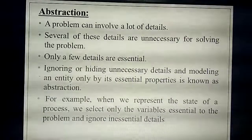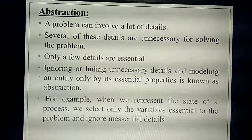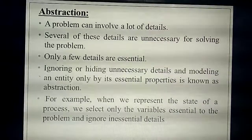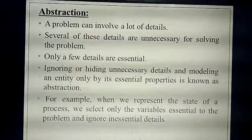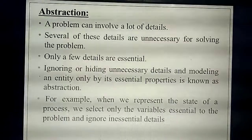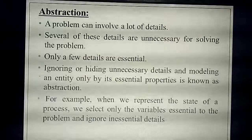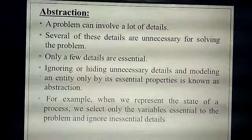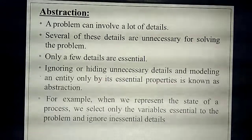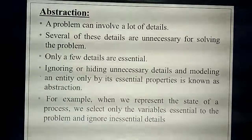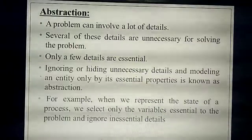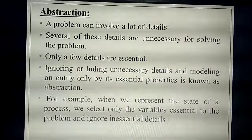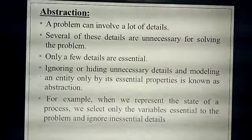For example, last class we studied the traffic signal example to represent state. In a traffic signal, how many states are there? Three: green, red, or amber. In a program, how you represent those states? Using variables. Only those essential variables are displayed in the program and non-essential details are not represented. So, abstraction means hiding unnecessary things and displaying essential properties. Using variables also, you are going to display only essential things and ignoring the non-essential things.